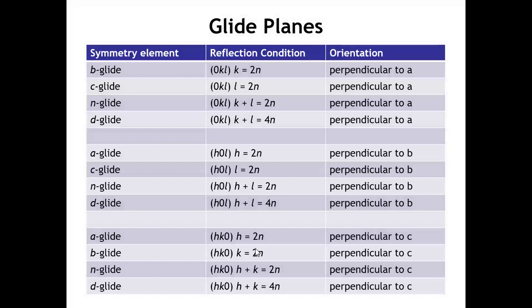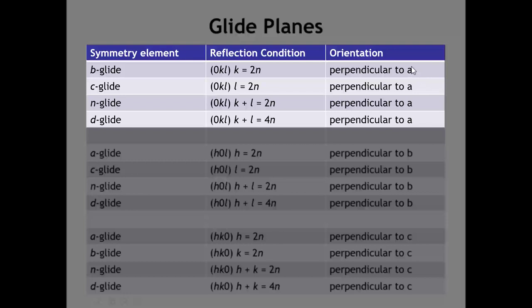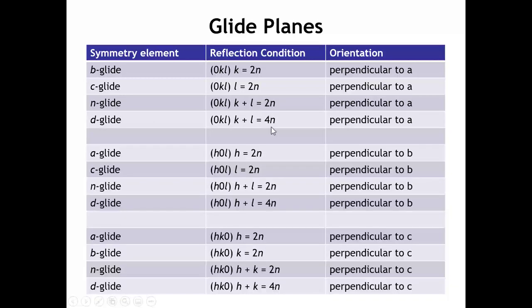Glide planes impact a different kind of reflection. If the glide plane is perpendicular to A, the peaks that are affected are those where H is zero — the 0KL reflections. If you have certain systematic absences in the 0KL reflections, that tells you there is a glide plane perpendicular to A. The type of glide depends on the details: a B glide requires K to be even; a C glide requires L to be even; a diagonal or N glide requires K plus L to be even; and a diamond glide requires K plus L to be a multiple of 4.